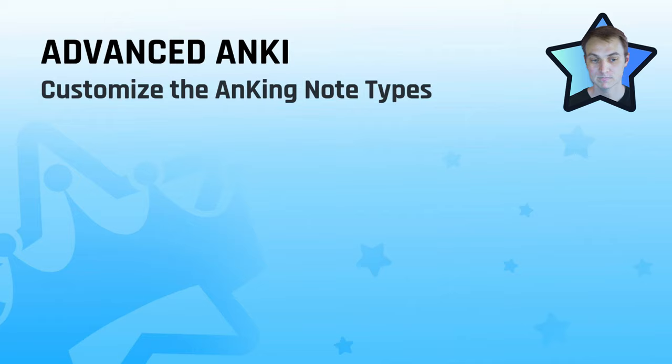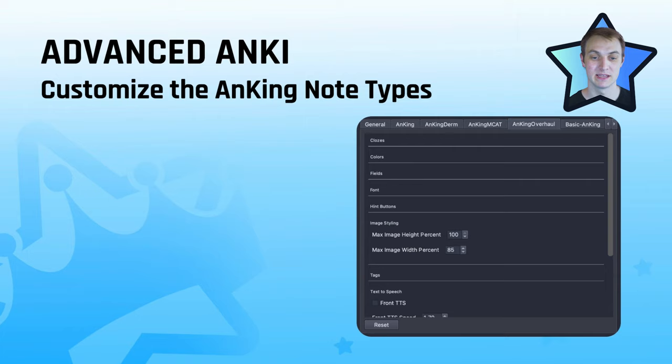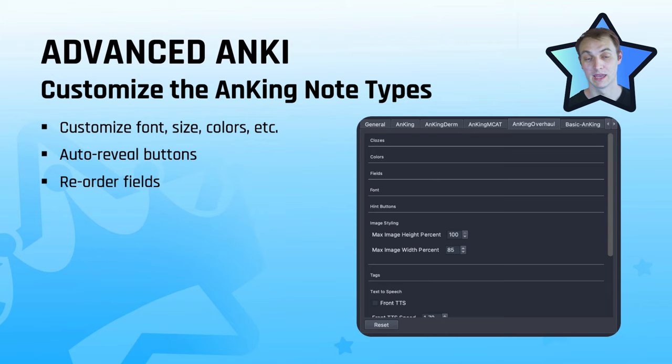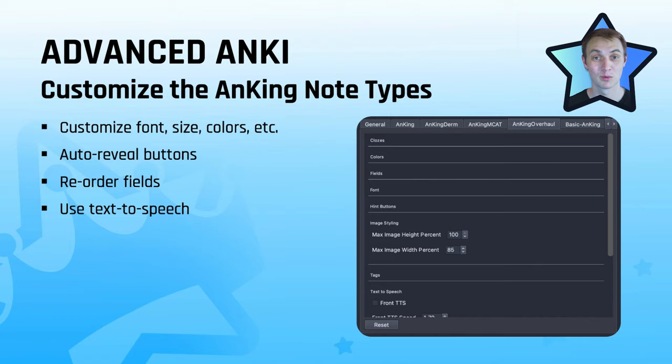The Anking Notetypes add-on is something a lot of people don't know about, but it's really useful. The Anking Overhaul Notetype is the one you'll want to customize. You can customize font, colors, everything. You can auto-reveal buttons — so if you always want the Sketchy field to show up, or only on certain cards, you can do that. You can reorder the fields so Sketchy shows on top or bottom, or Physio on top, however you want. You can also use text-to-speech so your cards read out loud to you while you're driving.